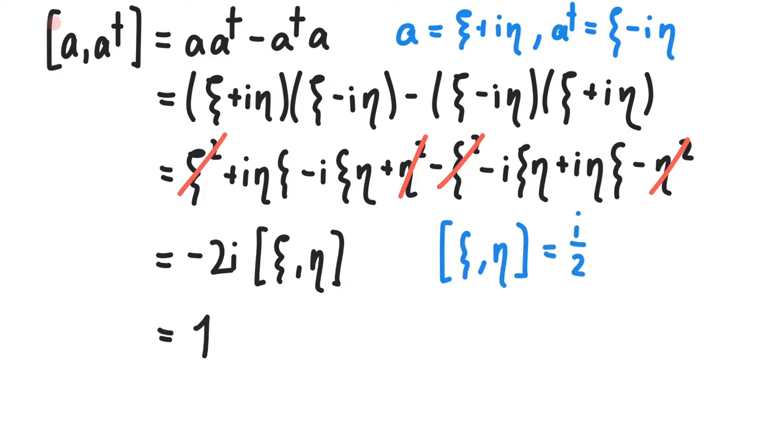So we end up with plus one. This means the commutator a-dagger a is minus one.